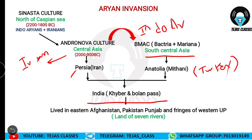The Indo-Aryans first lived in Eastern Afghanistan, Pakistan, Punjab, and the fringes of Western Uttar Pradesh. This particular area is also known as the Land of Seven Rivers, or Sapta Sindhu. We will see in the next slide why it is called the Land of Seven Rivers.